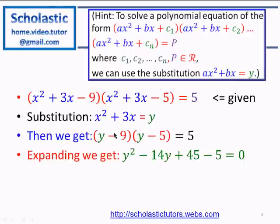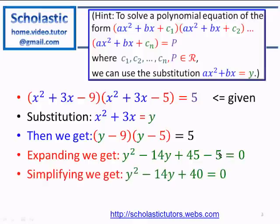So we get (y - 9)(y - 5) = 5. Expanding: y² - 5y - 9y + 45 = 5, which gives y² - 14y + 45 - 5 = 0. This simplifies to a quadratic equation: y² - 14y + 40 = 0.